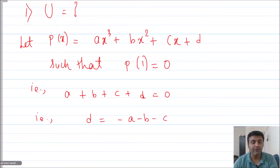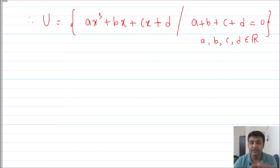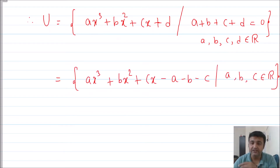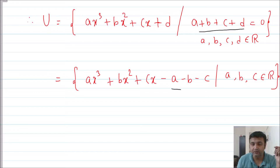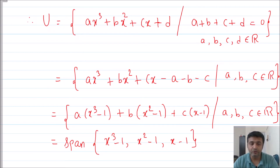Once you put in the condition and simplify, you get d = −a − b − c. You can also write it as a = −b − c − d, or isolate any variable you prefer. Now substitute this back into the general polynomial p(x). After substituting the condition, you can factor out a, b, and c as common terms.